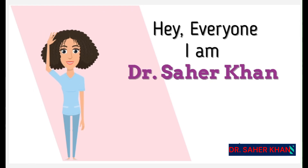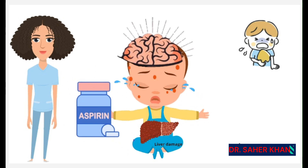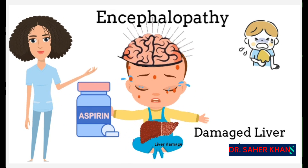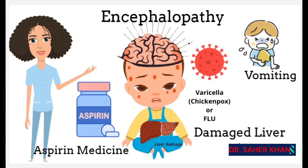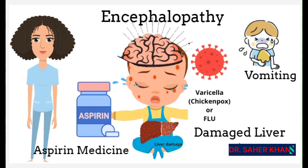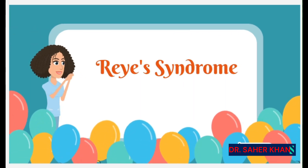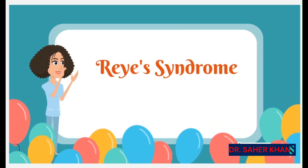Hey everyone, I'm back with the answer to the question I recently asked about the syndrome that affects young children, characterized by encephalopathy, liver damage, flu, vomiting, with aspirin as a contributing factor. The correct answer is Reye's syndrome. Congratulations to everyone who got it right — you all did a fantastic job.